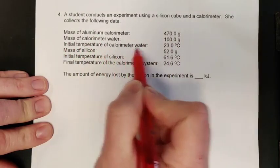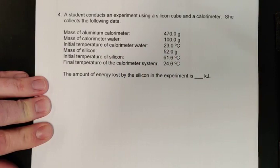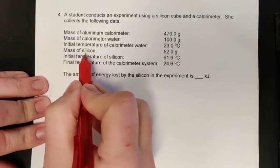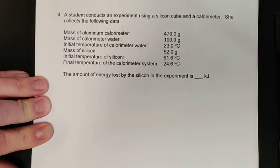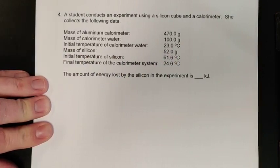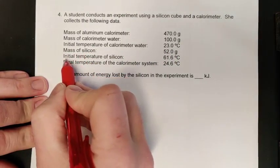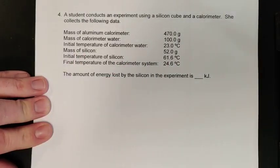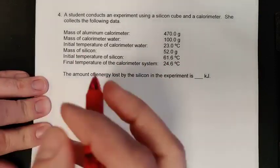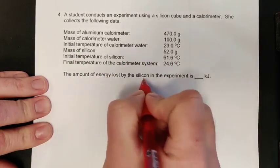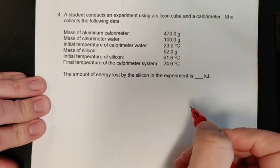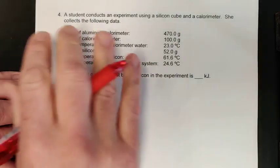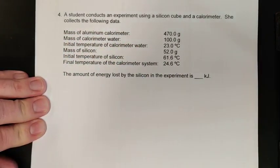The initial temperature of her calorimeter water is 23 degrees. The mass of the silicone cube that she drops into the water is 52.0 grams, and the temperature of the silicon starts at 61, but the system finishes at 24.6. Lots and lots of numbers here. We are looking for the amount of energy lost by the silicon in the experiment.